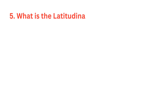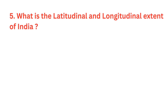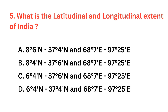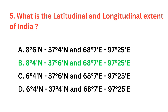What is the latitudinal and longitudinal extent of India? The correct answer is option B: 8 degrees 4 minutes north to 37 degrees 6 minutes north, and the longitudinal extent is 68 degrees 7 minutes east to 97 degrees 25 minutes east.